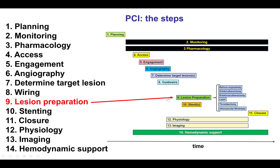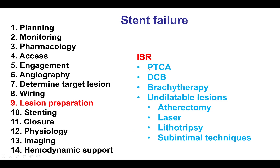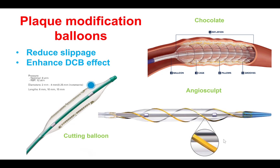Lesion preparation, step number 9, is very important for in-stent restenotic lesions. Pretty much every lesion gets ballooned. But there are many other modalities that can be used, such as drug-coated balloons, brachytherapy, and more aggressive modalities for undilatable lesions, such as atherectomy, laser, lithotripsy, and subintimal techniques. Plaque modification balloons are often preferred because they are less likely to have the watermelon seeding effect, which might lead to injury of other coronary segments — the so-called geographic miss — that can lead to in-stent restenosis.